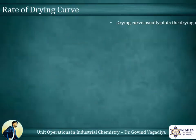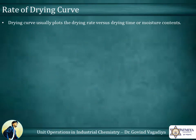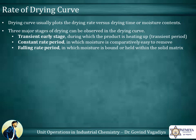Rate of drying curve: a drying curve usually plots the drying rate versus drying time or moisture contents. Three major stages of drying can be observed in the drying curve. The first stage is a transient early stage during which the product is heating up — the transient period.